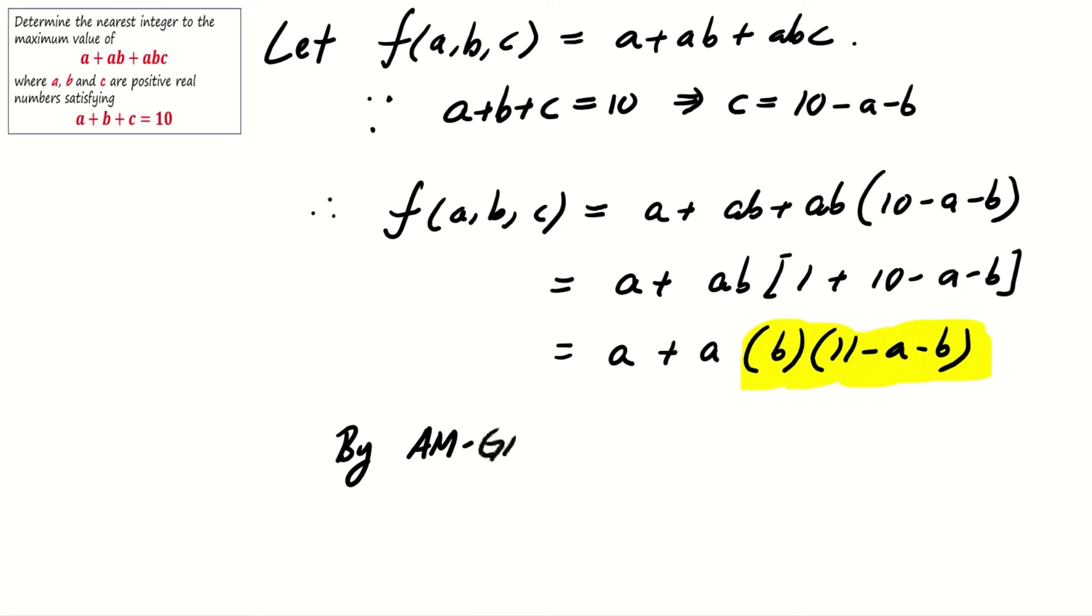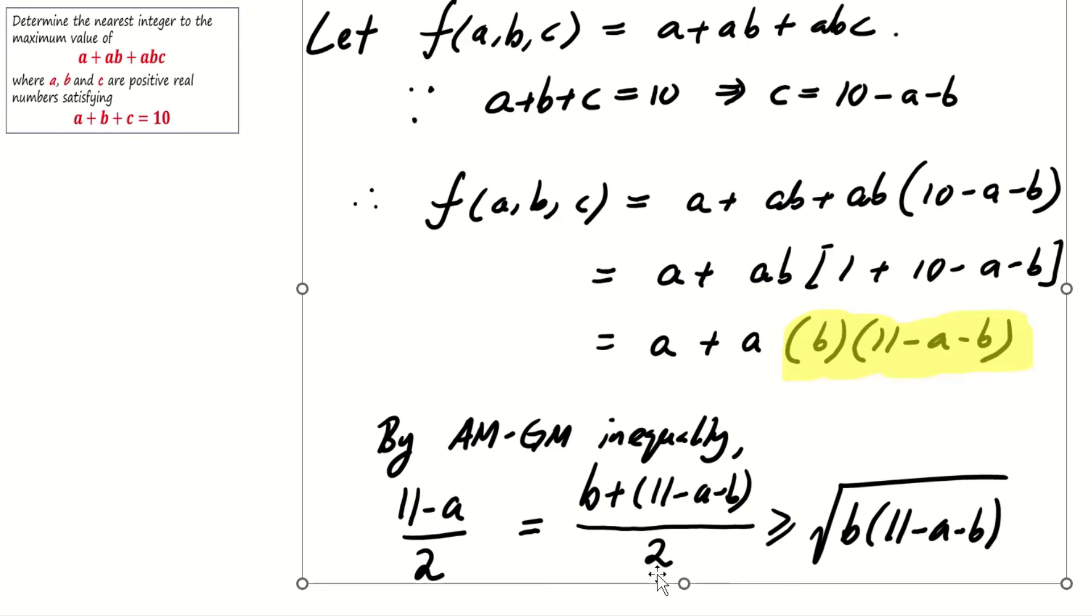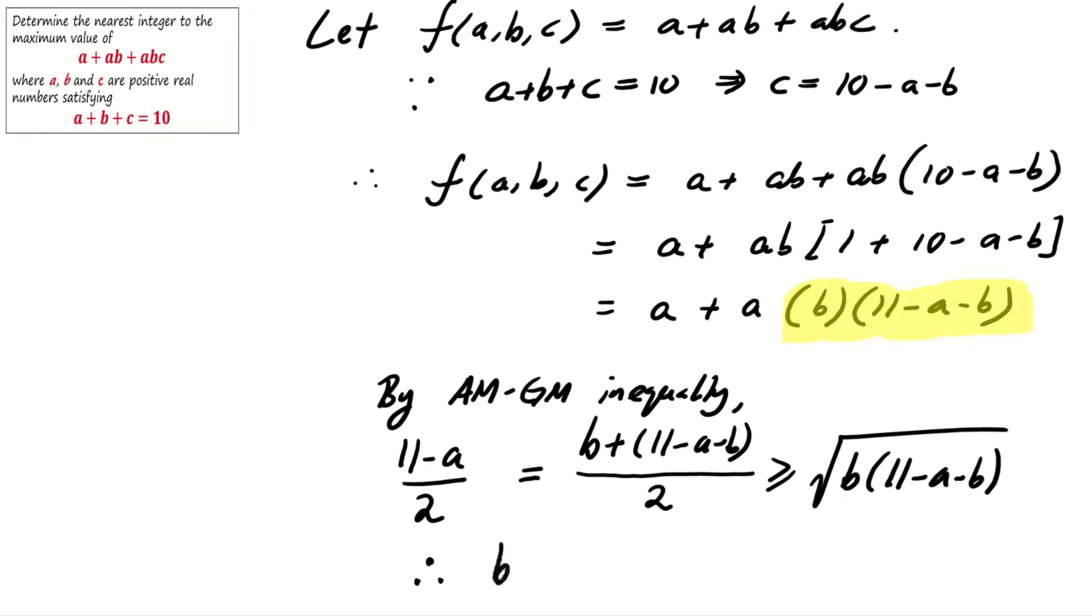Now, by AM-GM inequality, (a plus 11 minus a minus b) over 2 is at least square root of b times (11 minus a minus b). The expression on the left-hand side simplifies to (11 minus a) over 2. This means that b times (11 minus a minus b) is not more than 1 over 4 times (11 minus a) squared.